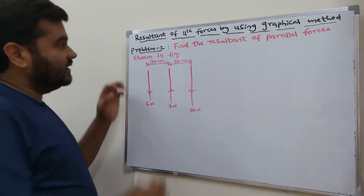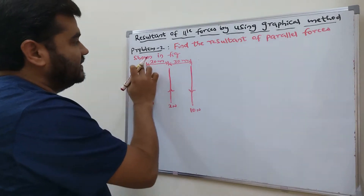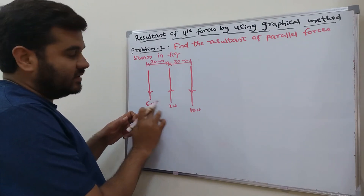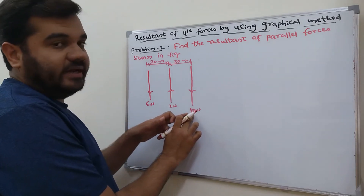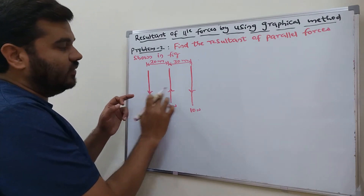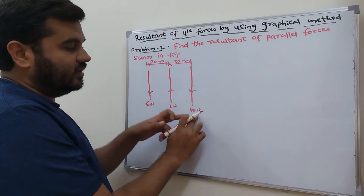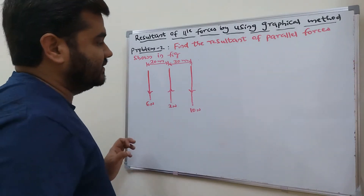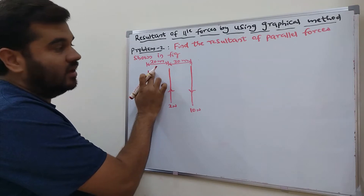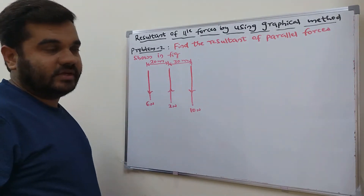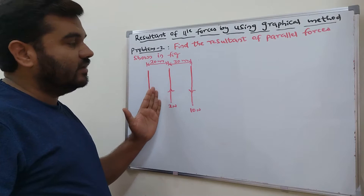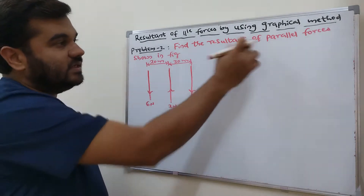Reading the problem: find the resultant of parallel forces shown in the figure. There are three forces: the first force is 6 Newton in the downward direction, the second is 2 Newton in the upward direction, and the third is 10 Newton in the downward direction. The distance between the first and second force is 20 millimeters, and between the second and third force is 30 millimeters. Find the magnitude and location of the resultant using the graphical method.